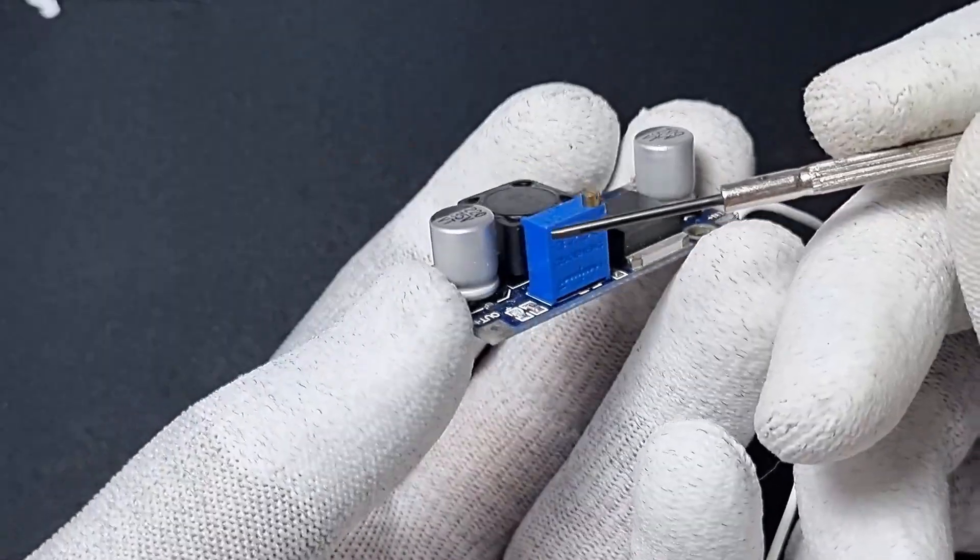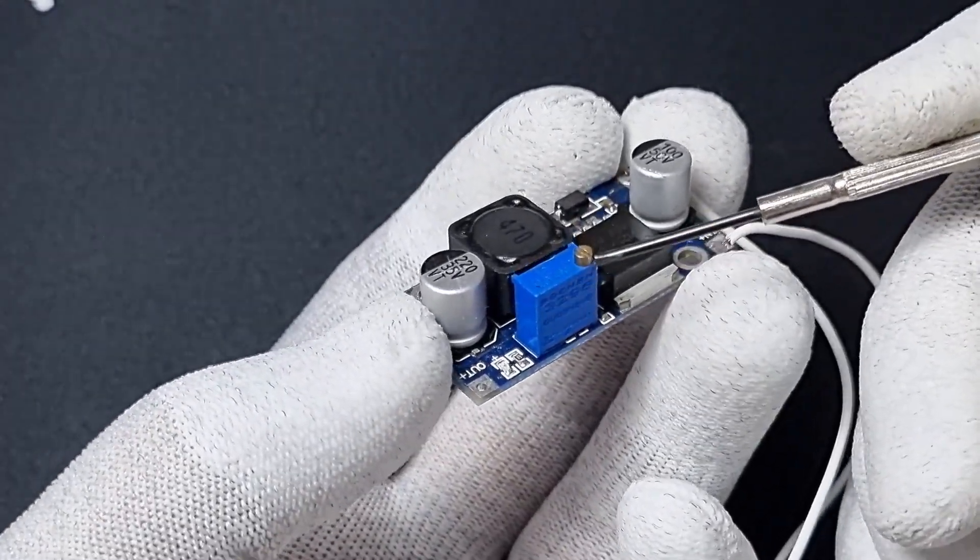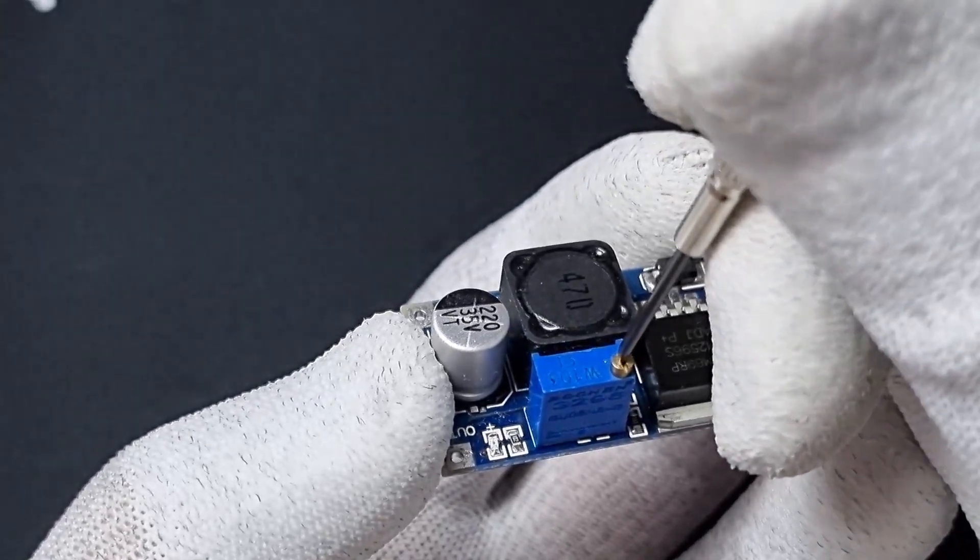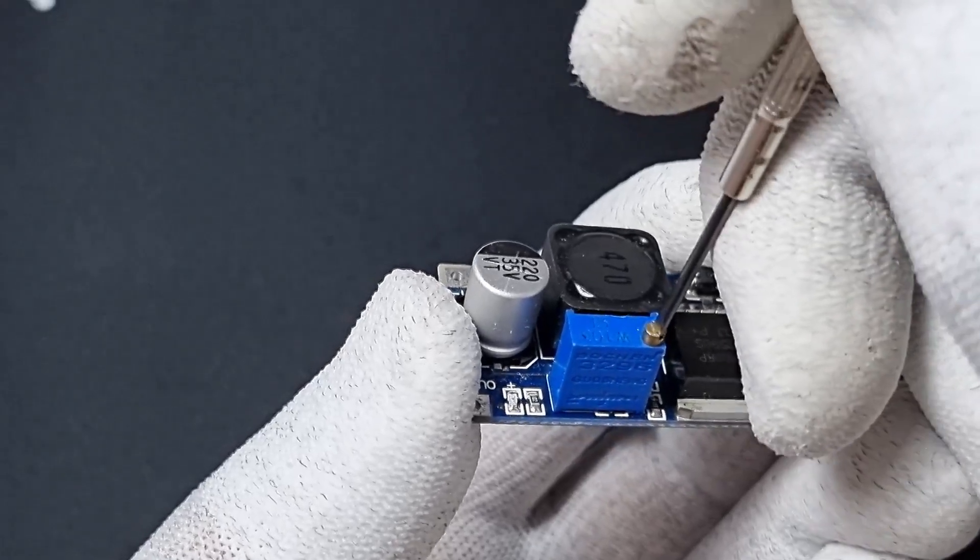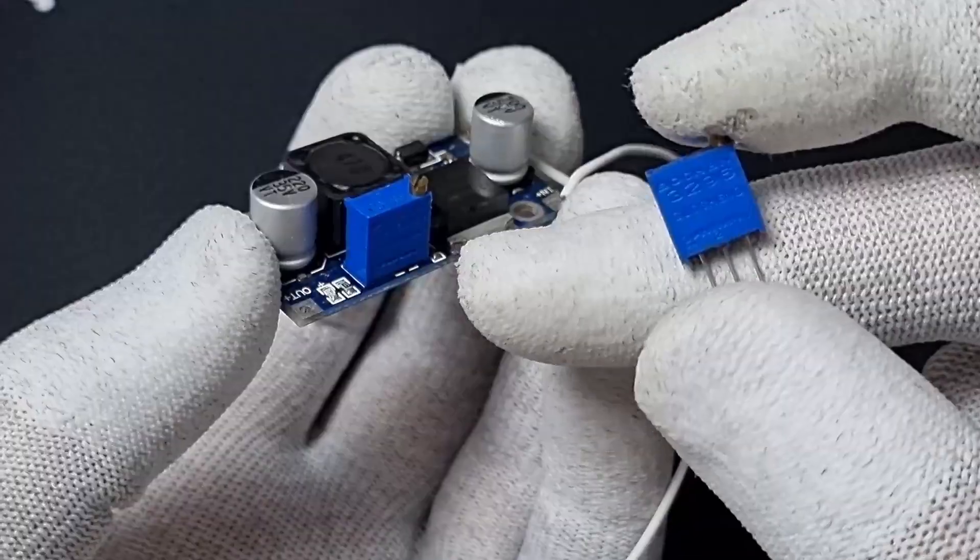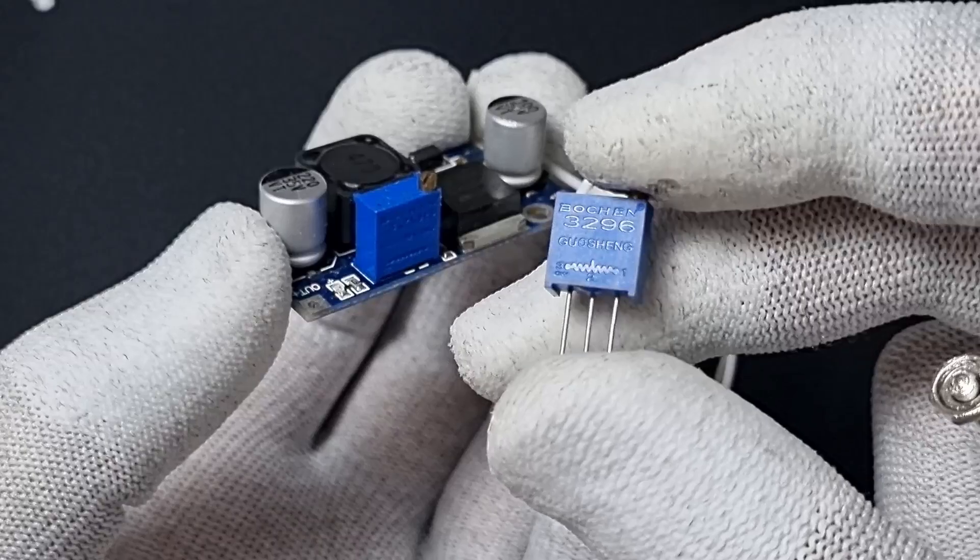Another important type of potentiometer is this little guy, often used for fine adjustments. We use a small screwdriver to turn the tip of the potentiometer, and as you can see, it requires multiple turns to change the resistance, making it more precise.